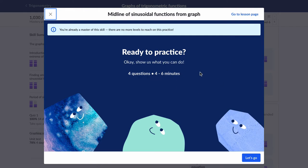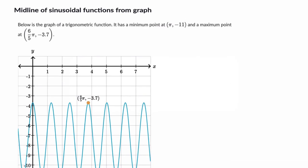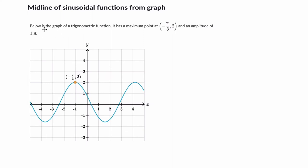So we'll look at four examples so you can make sense of this. Below is the graph of a trig function. Its maximum point is at negative pi over 3, 2. Let me just underline this for myself. That's at this point right here. And an amplitude of 1.8. They want us to find the equation for the midline.